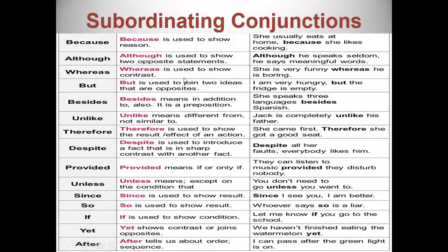'Because' is used to show reason: 'She usually eats at home because she likes cooking.' 'Although' is used to show two opposite statements: 'Although he speaks seldom, he says meaningful words.' 'Whereas' is used to show contrast. 'But' is used to join two opposite ideas: 'I am very hungry but the fridge is empty' — these are two opposite ideas.